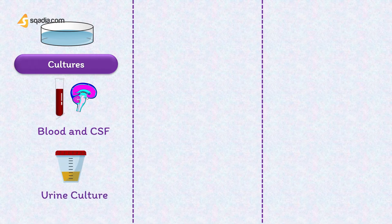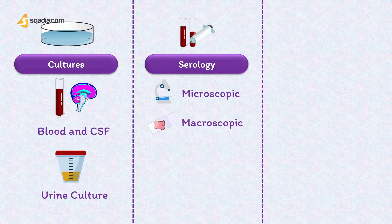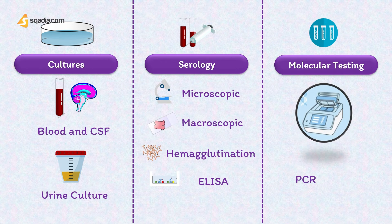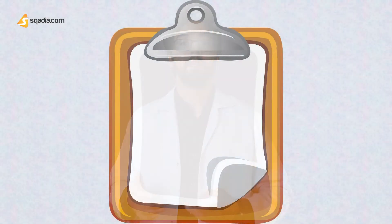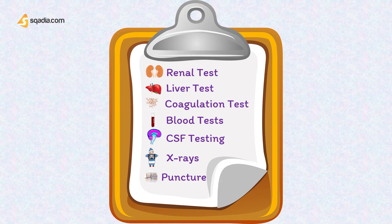The diagnostic tools for leptospirosis include: first, cultures — blood and CSF specimens come out positive during the first 10 days of illness, whereas urine culture becomes positive during the second week. Second, serology — including microscopic agglutination test, macroscopic agglutination test, hemagglutination, and most commonly enzyme-linked immunosorbent assay (ELISA). Third, molecular tests such as PCR, which provide accurate and rapid diagnosis. Additional blood work including renal and liver function tests, coagulation studies, CBC, CSF analysis, and chest X-ray may also be needed. If aseptic meningitis is suspected, lumbar puncture should be performed.